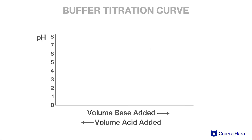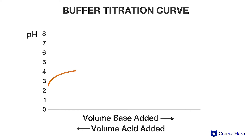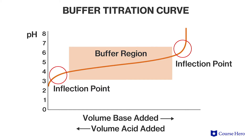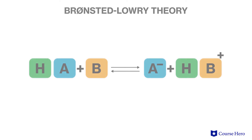The titration curve demonstrates how little the pH changes as acid or base is added to a buffer solution. The points where the slope changes are known as inflection points, and it is the area between these points that is the solution's buffer region. In this region, large additions of acid or base result in small changes in pH, and this can be explained by the Bronsted-Lowry equation — many weak acids and bases in the solution acting as donors and recipients of hydrogen ions.